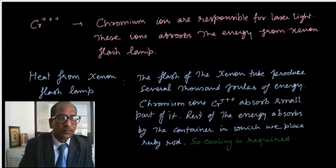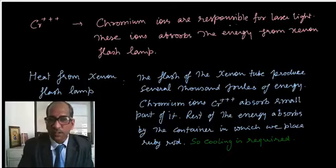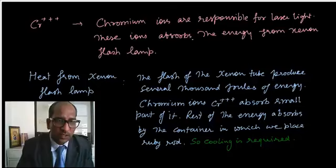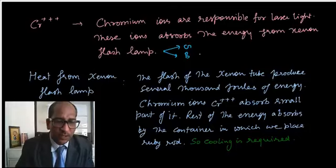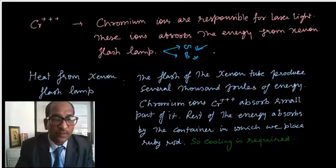Chromium ions are responsible for laser light. These ions absorb the green color and the corresponding energy, then the ions get excited and after that come into the metastable state.